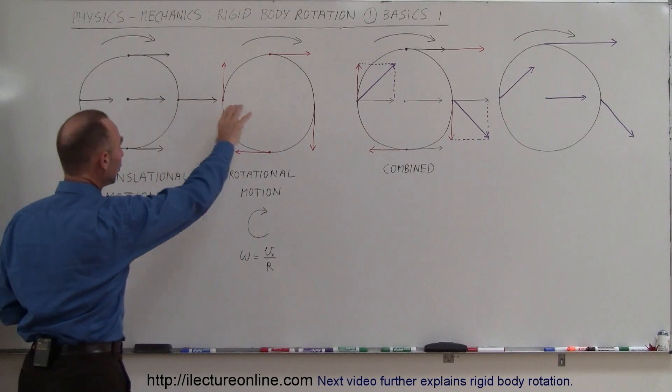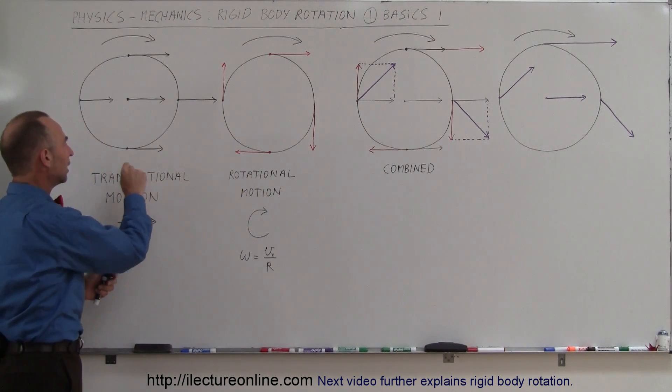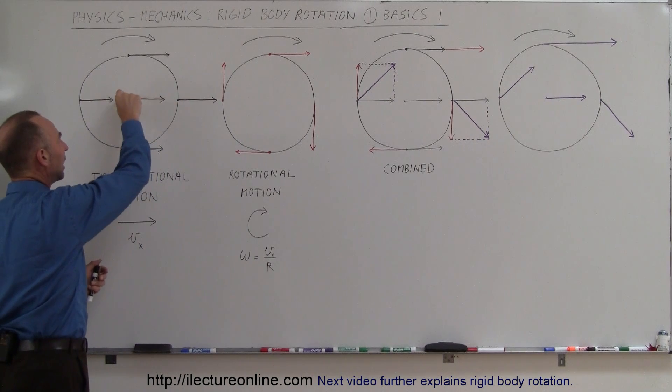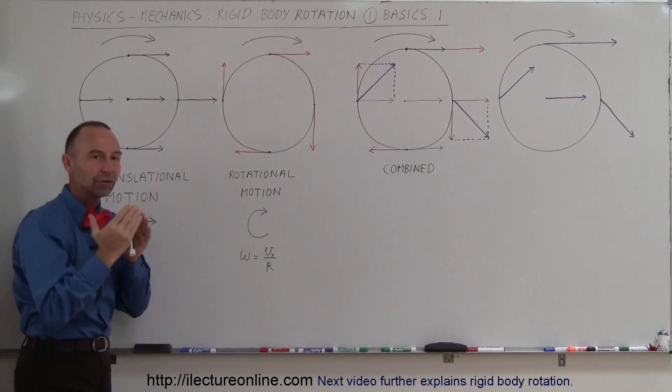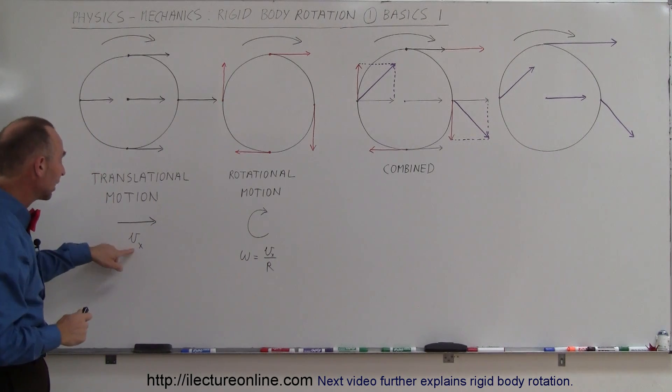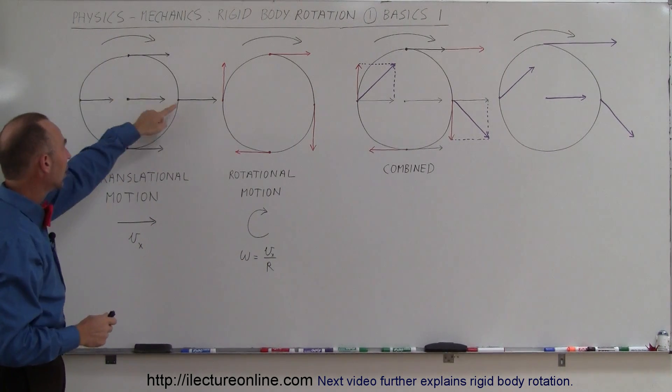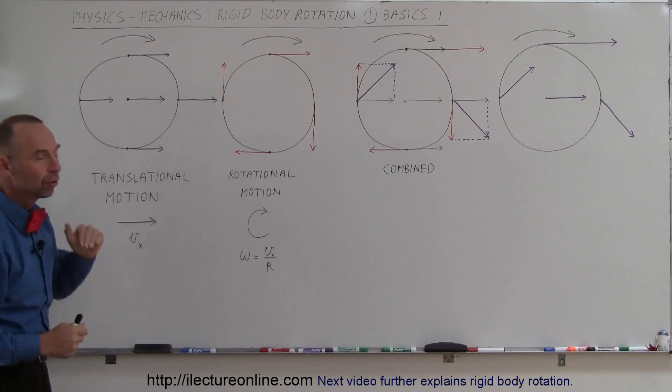The car is moving forward, so we call that translational motion. That means every piece on the tire, every piece on the wheel, at the center, at the edges, everywhere, is moving to the right at a certain velocity. Whatever the velocity of the car is in the x direction, that will be the motion of a particle on that Rigid Body moving to the right.